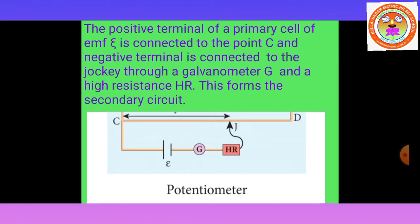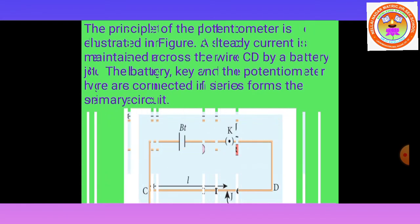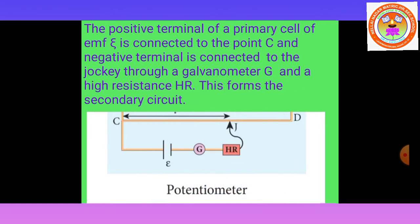The positive terminal of the primary cell of electromotive force ψ is connected to point C. The negative terminal is connected to the jockey through a galvanometer and a high resistance. This forms the secondary circuit. The potentiometer thus consists of a primary circuit and a secondary circuit.